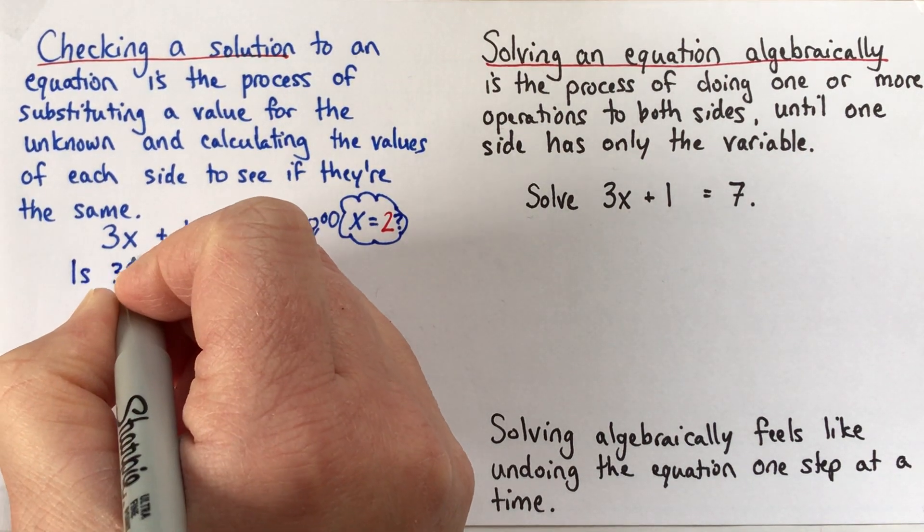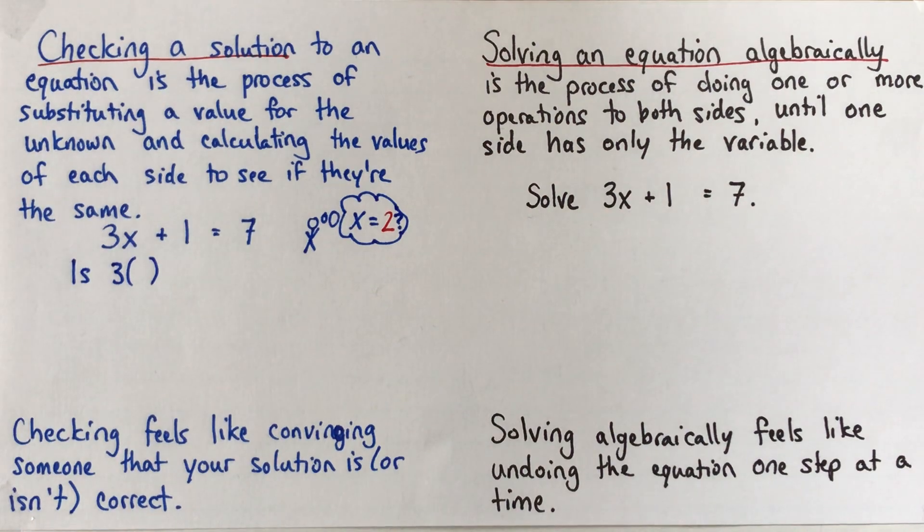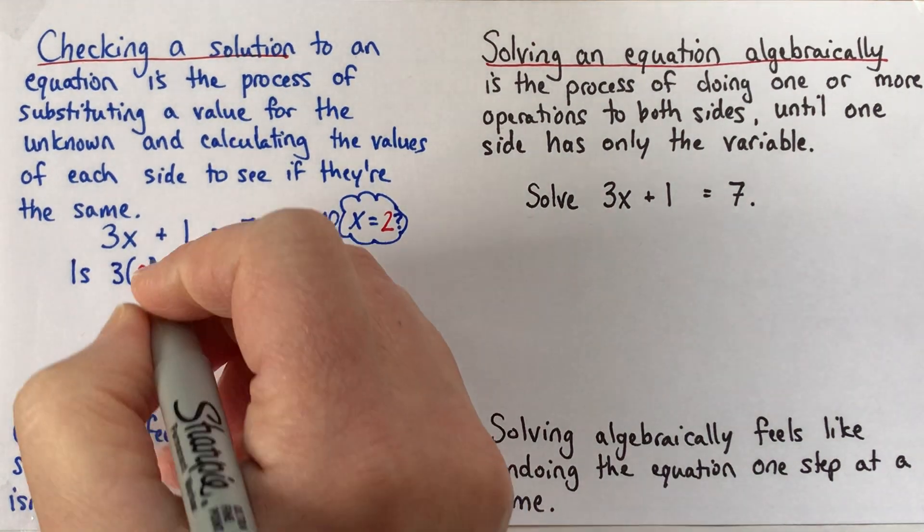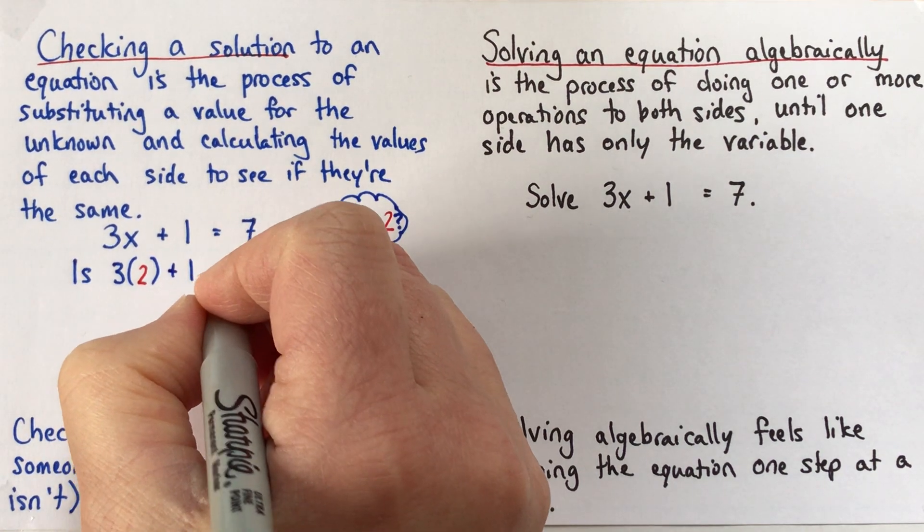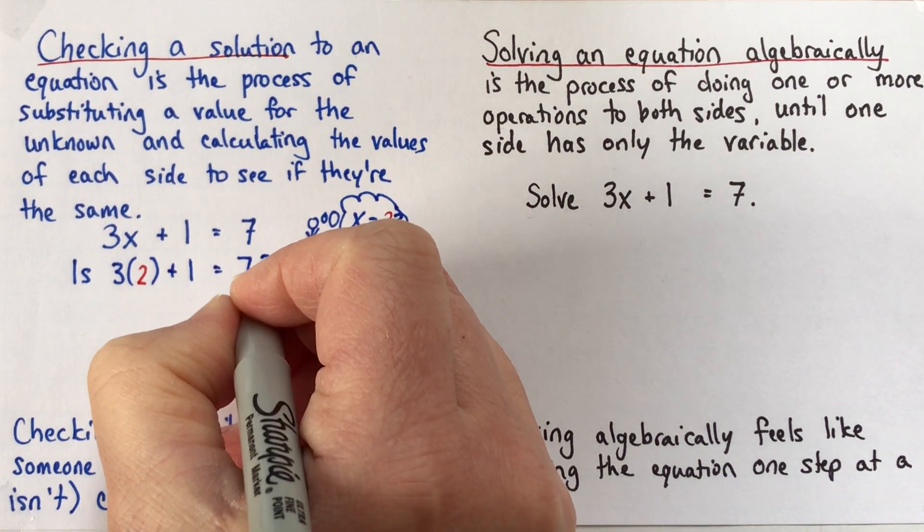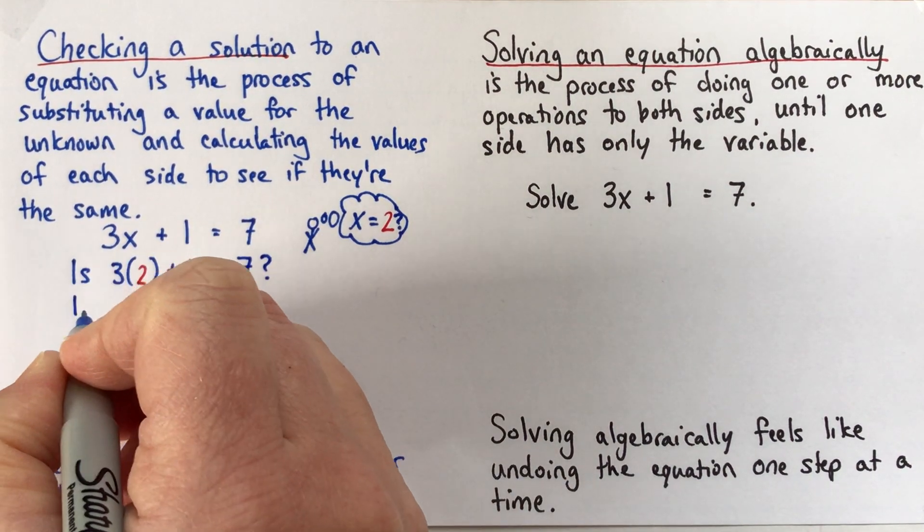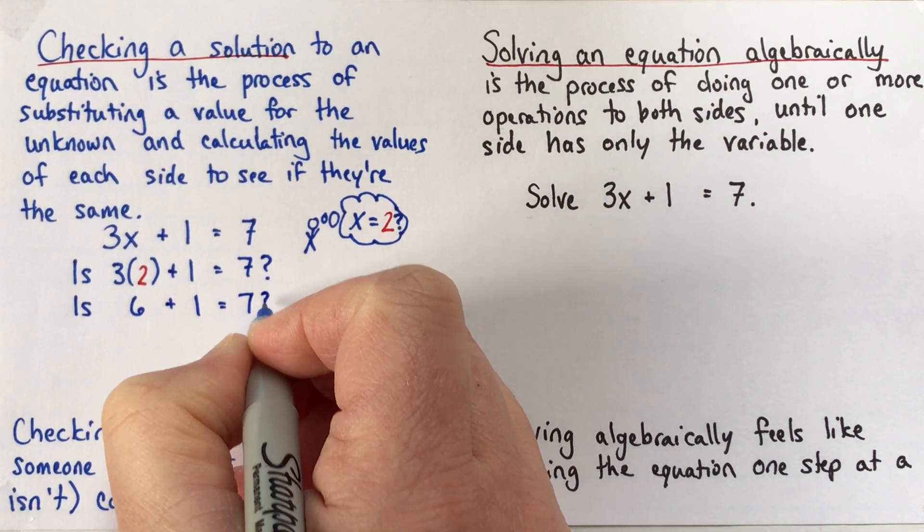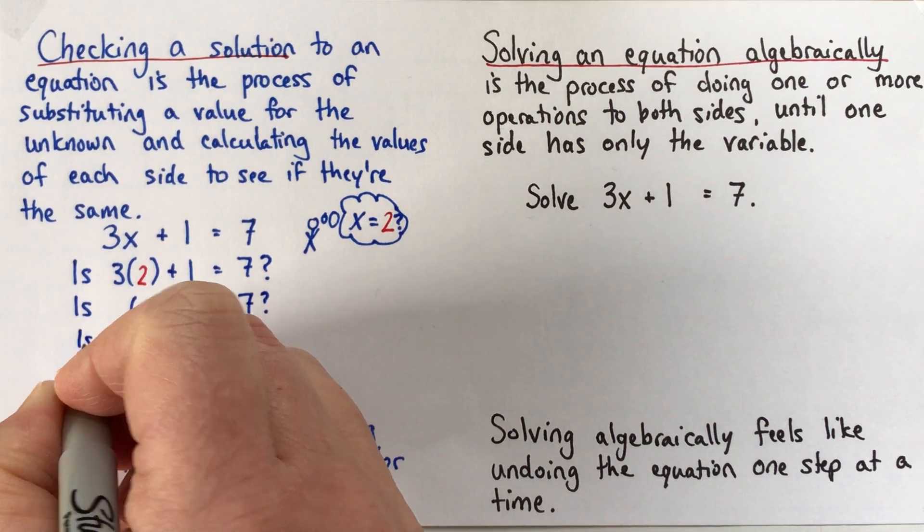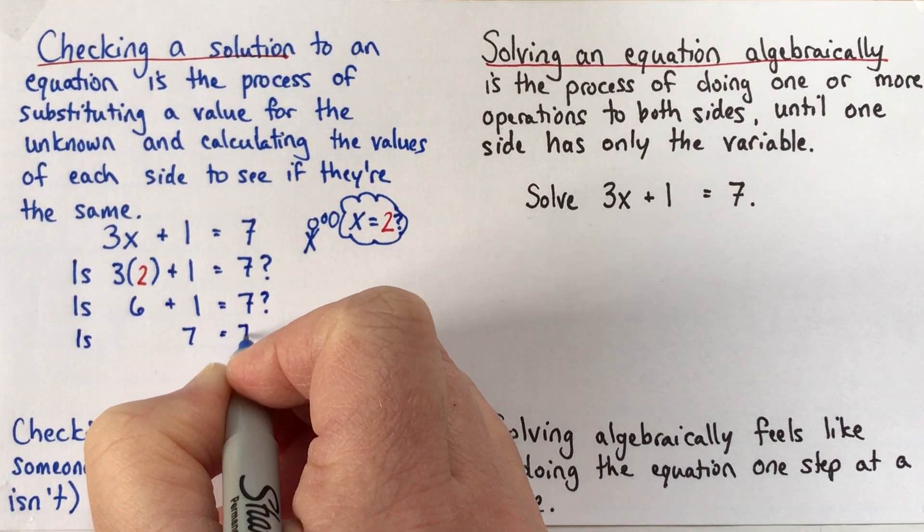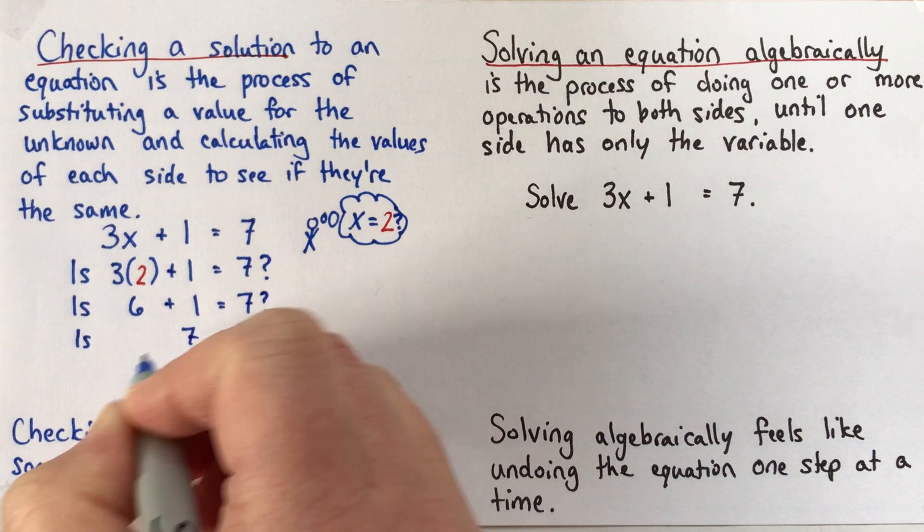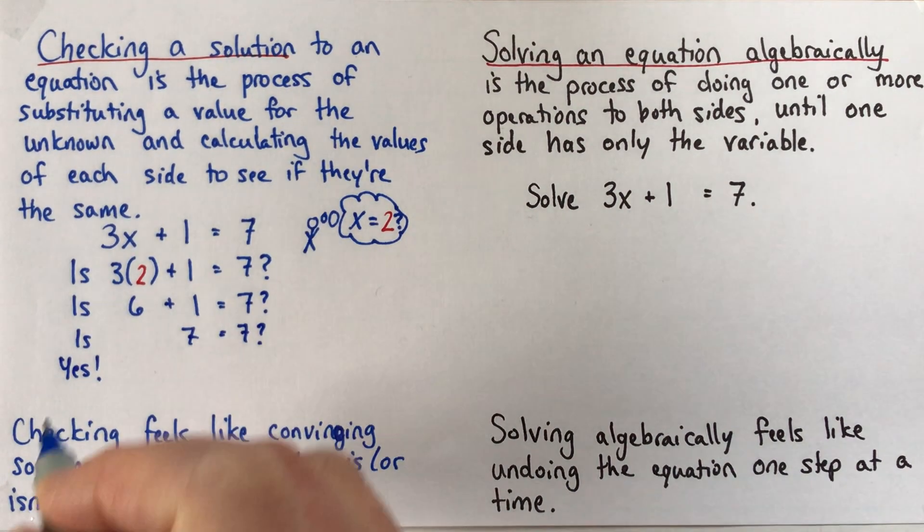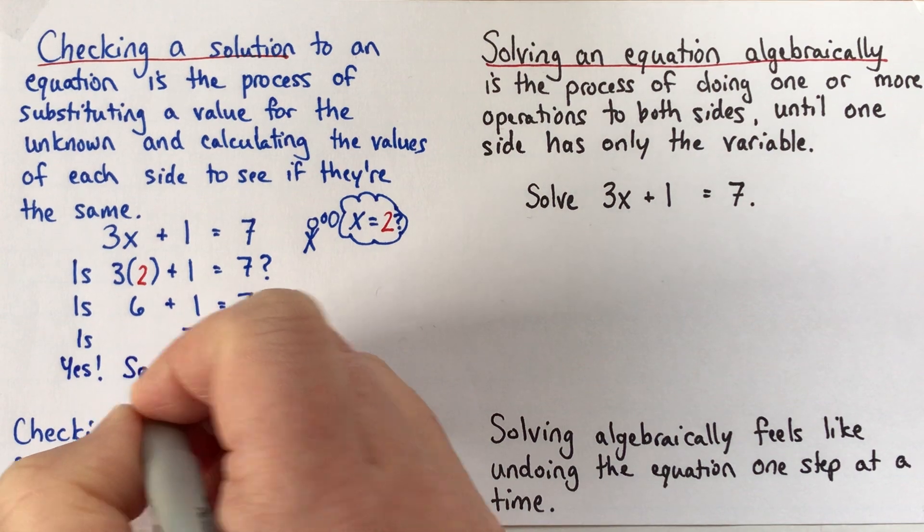if I replace my x with 2 here, if I add 1 to that, is that equal to 7? And then often they do a lovely job of showing all the steps. Yes, 7 is equal to 7, and then they even do a lovely job of writing this conclusion.